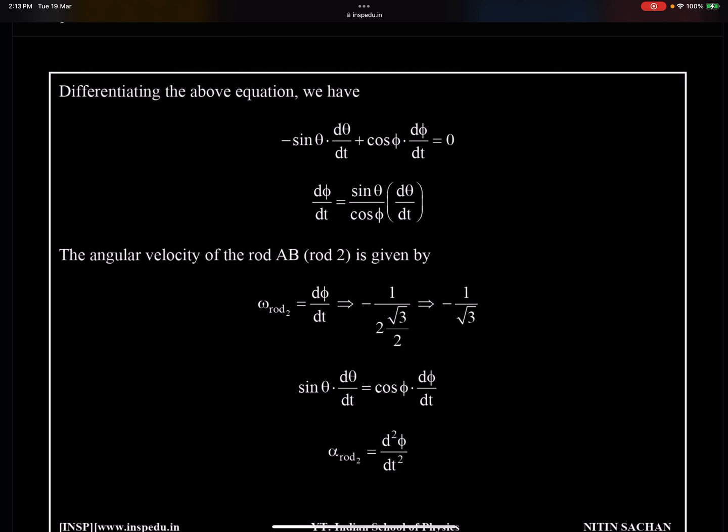So if we are going to substitute sin 30 divided by cos 30 times dθ/dt is minus 1. So when we substitute this value, we are getting dφ/dt which is omega of rod 2 as minus 1 by root 3. Magnitude is 1 by root 3, negative sign represents that phi decreases.